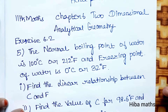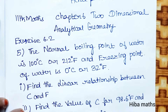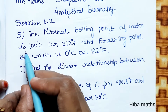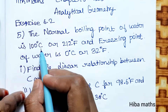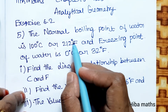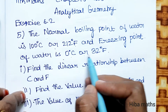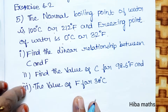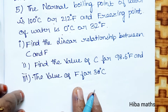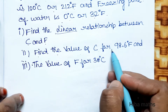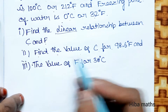Hello students, welcome to Hibamax 11 standard Math, Chapter 6: Two-Dimensional Analytical Geometry. Exercise 6.05, question. The normal boiling point of water is 100 degree Celsius or 212 degree Fahrenheit, and the freezing point of water is 0 degree Celsius or 32 degree Fahrenheit. Find the linear relationship between C and F, find the value of C for 98.6 Fahrenheit,